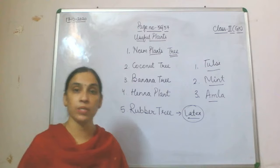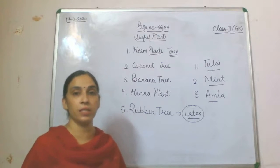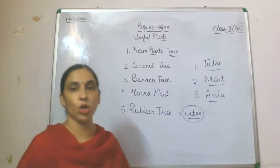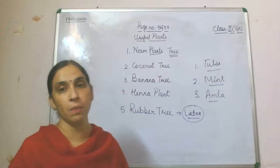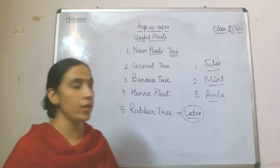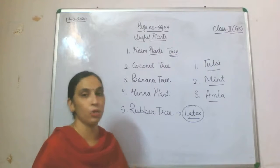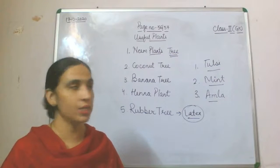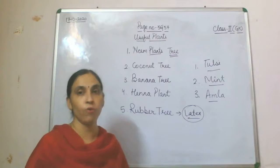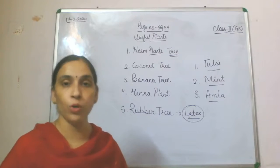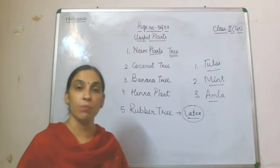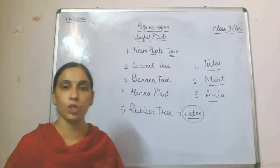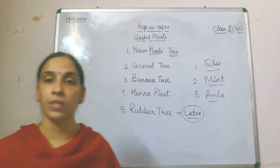We also get different medicinal plants from forests. Medicinal plants found at home include tulsi, mint, and amla. Tulsi is very good for cough and cold, mint is very good for digestion, and amla is very good for the growth of your hair and can make your hair more black. These are the useful plants given in your book.